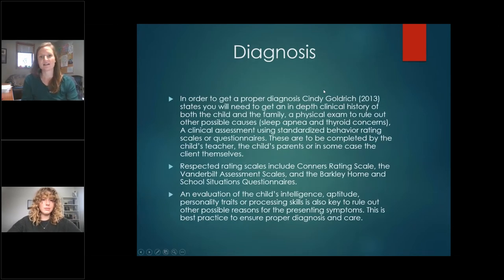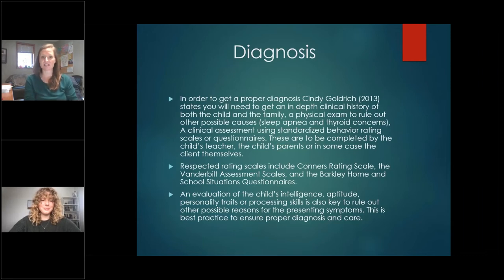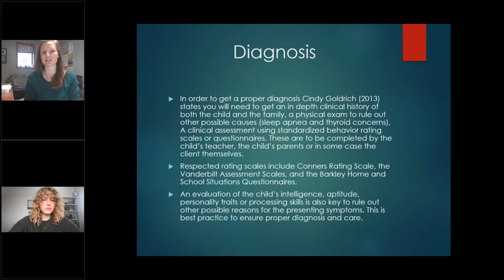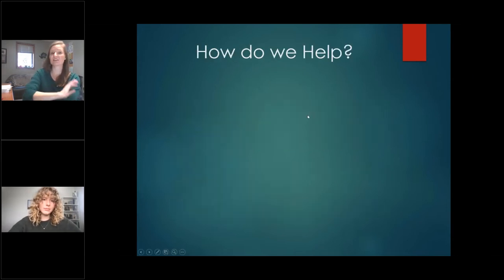For an accurate diagnosis, Cindy Goldrich states you'll need an in-depth clinical history of both the child and the family. This includes a physical exam to rule out other possible causes like sleep apnea or thyroid concerns, and a clinical assessment using a standardized behavior rating scale. Respected rating scales include the Conners Rating Scale, the Vanderbilt, and the Barkley Home and School Situations Questionnaire. The evaluation is typically given to both parents and teachers. An evaluation of the child's intelligence or aptitude may also be encouraged to rule out other causes.